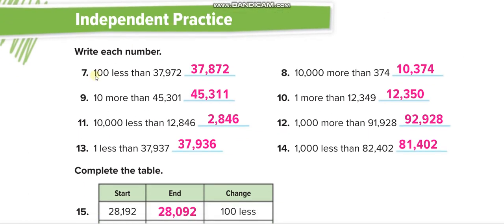100,000 less, so minus from the 100,000 place value: 9 becomes 8. 10,000 less. 10,000 more, so 10,374. 10 more, so add in the tens: 0 plus 1 becomes 1. 1 more: 49 becomes 50.